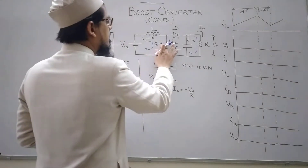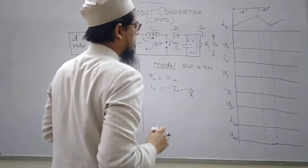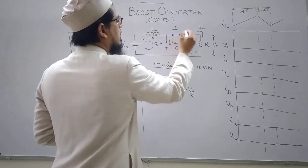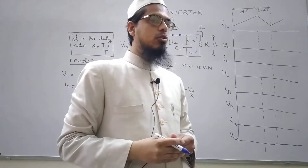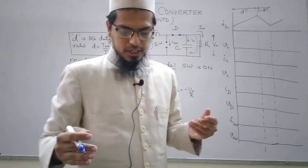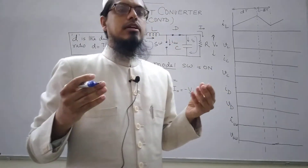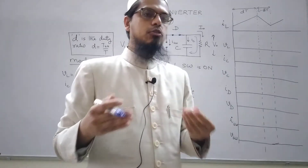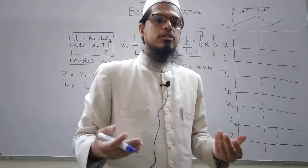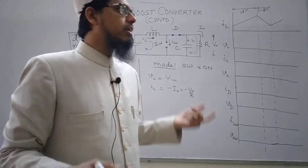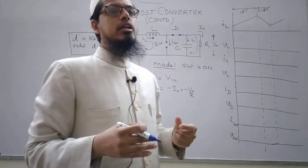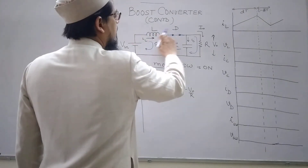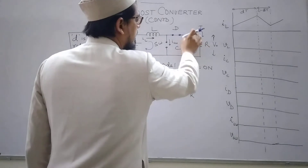In mode 2, when the switch is off — that means it is open circuit — the diode is now in conduction mode, which is as good as a short circuit. Please remember that at the beginning of the course, I mentioned that switches would be assumed to be ideal throughout the lecture, unless otherwise stated. When the switch is on, no voltage drop will appear across it, and when it is off, no current flows through it. So in this case, all the current flows through the inductor, through the diode, and then finally to the load.